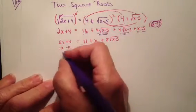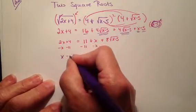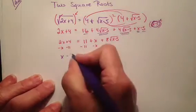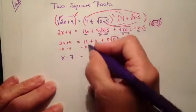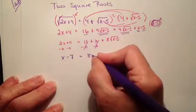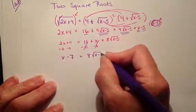And when I do that, I end up with x minus 7 equals, so those went away. And then I just have 8 square roots of x minus 5.